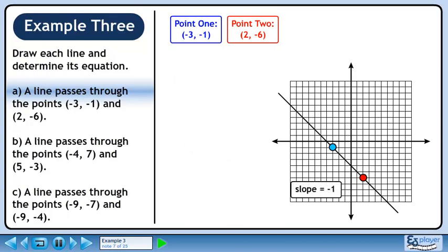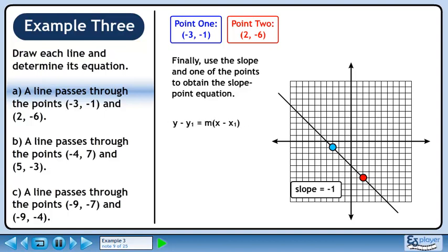Let's store the slope beside the line. Finally, use the slope in one of the points to obtain the slope point equation. Start with y minus y1 equals m times x minus x1. Plug x1, y1, and m into the equation. The slope point equation is y plus 1 equals minus 1 times x plus 3.